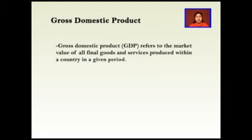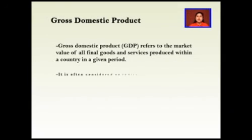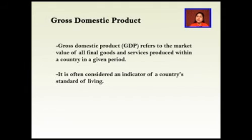What is GDP? Gross domestic product refers to the market value of all final goods and services produced within a country in a given period. It is considered an indicator of a country's standard of living — the more the GDP of a country, the higher the living standard of the people of that country.